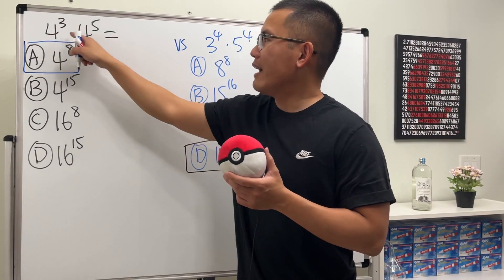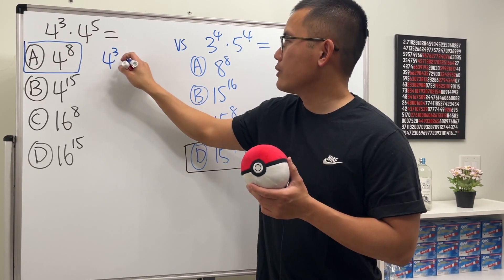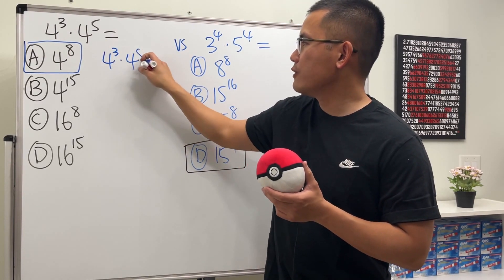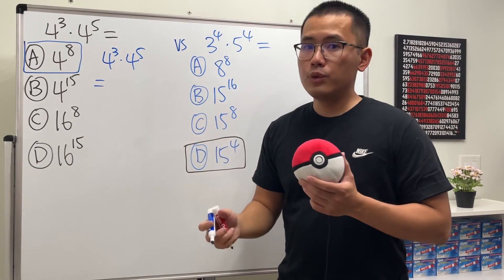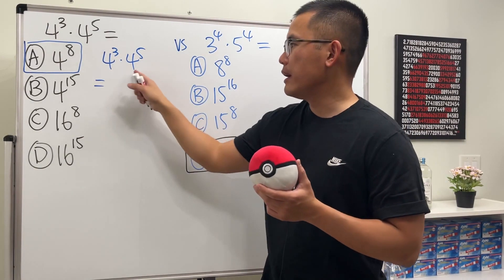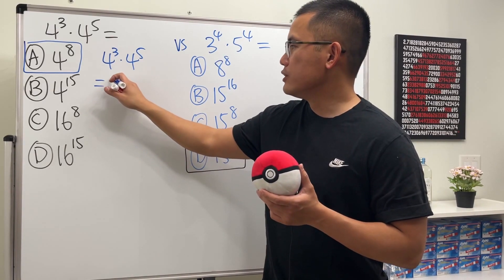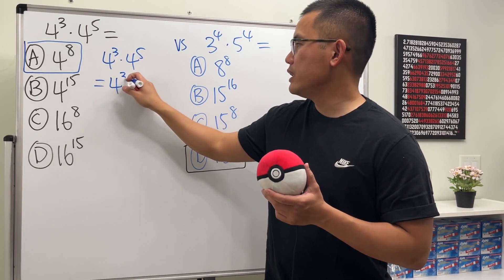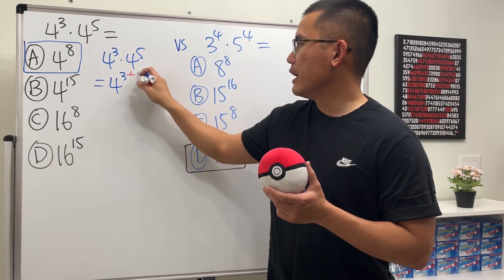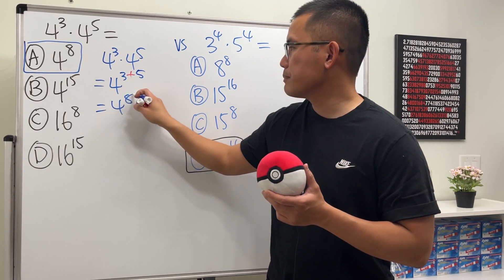Notice that when we have the same base — 4 to the 3rd power times 4 to the 5th power — what we can do is just add the exponents and keep the base the same. So this is just going to be 4, and then you just do 3 plus 5.